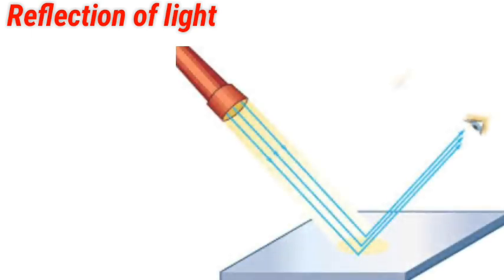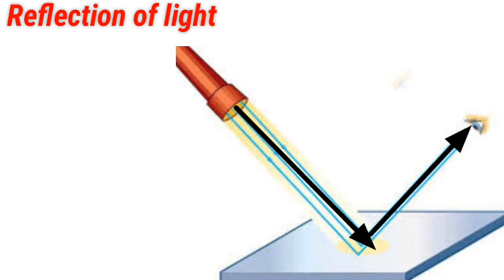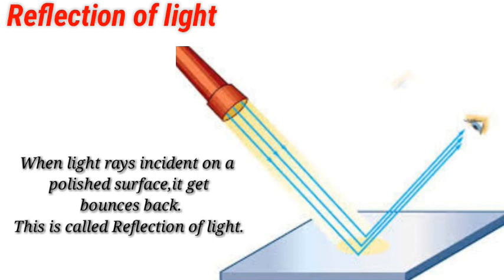Let's start the class. We have studied light in 6th, 7th, and 8th grade. There is a gap in 9th, and now we are in 10th. We have already studied the reflection of light - we have already studied light rays on a polished surface. The rays will reflect, that is, bounce back. Simply, that is reflection.